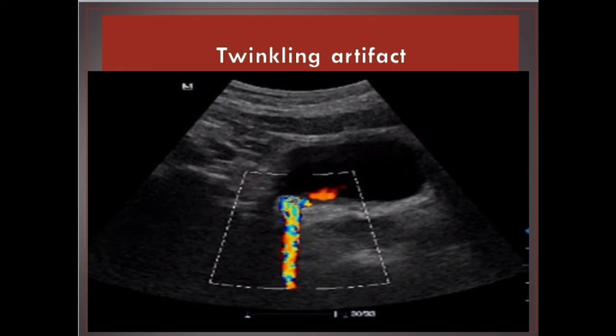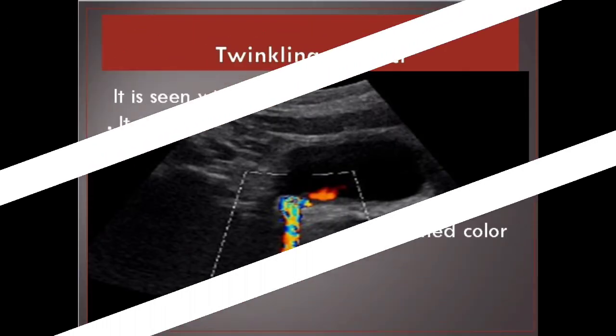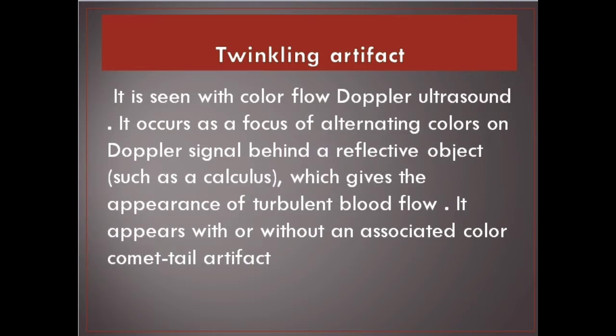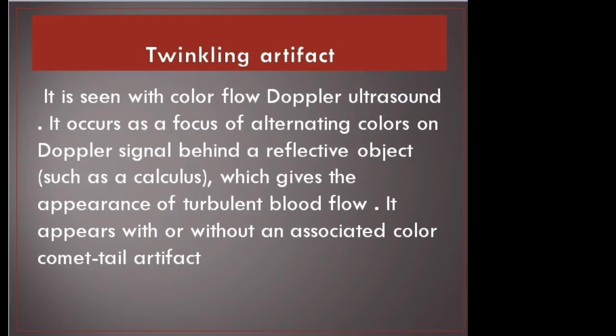Twinkling artifact. Twinkling artifact is seen with color flow Doppler ultrasound. It occurs as a focus of alternating colors on the Doppler signal behind a reflective object, such as a calculus, which gives the appearance of turbulent blood flow. It appears with or without an associated color comet tail artifact.